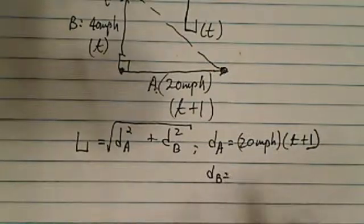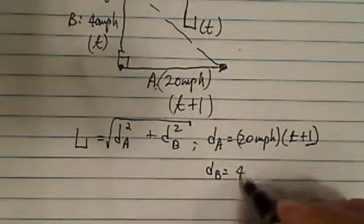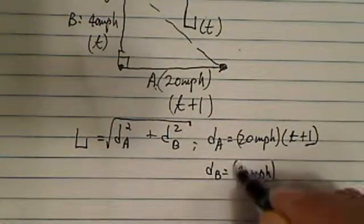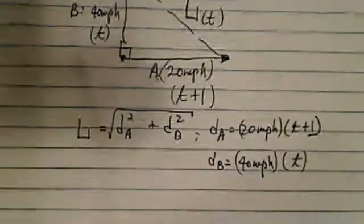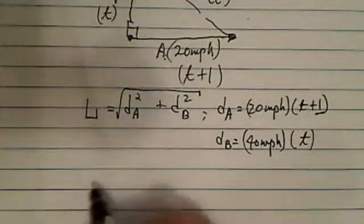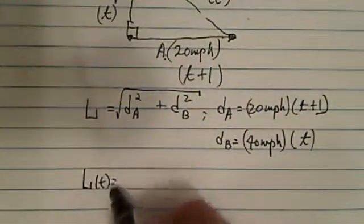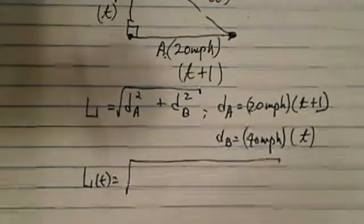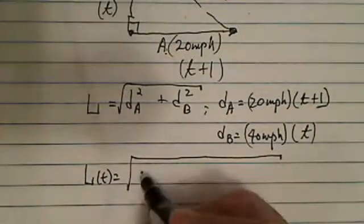And D of B, distance traveled by car B, is 40 miles per hour, and only traveled T hours. Now let's plug it back in here. So we have L of T is equal to... it's a bit messy, but the concept is not too bad.